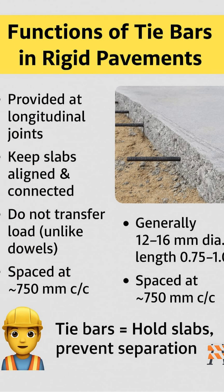The main functions of tie bars are: 1. To hold adjacent slabs together. 2. To prevent joints from widening. 3. To control cracks caused by temperature and shrinkage. Unlike dowel bars, tie bars do not transfer load. Their job is only to keep slabs tight together.